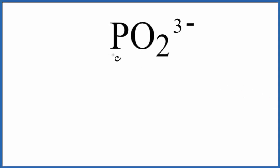In this video, we'll write the Lewis structure for PO2³⁻, the hypophosphite ion. Let's count the valence electrons up.